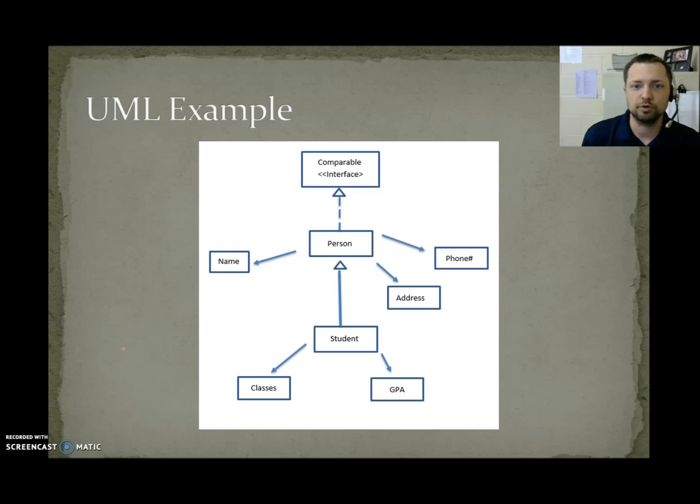Here's an example of a UML diagram. So we have a comparable interface. A person might be a comparable. If they are a comparable, that means they agreed to write the compareTo method. But a person would have a name, address, and a phone number. And then we have a solid line pointing up to person saying, a student is a person. And a student would have a list of classes they're enrolled in, and GPA. And those are has-a relationships. But student has an is-a relationship to person.